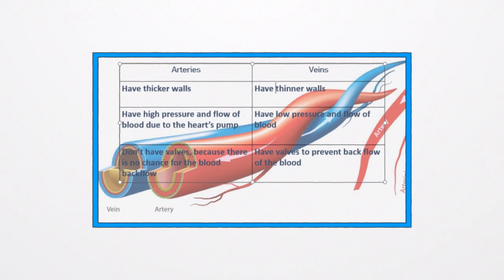In this table you will find a comparison between arteries and veins. You will notice that arteries are stronger and have thicker walls to withstand the high pressure of the blood in them that results from the heart's pump. And because the blood rushes quickly in these arteries, there is no need for any valves in them because the blood will already be forced to move in one direction with no chance for any backflow.